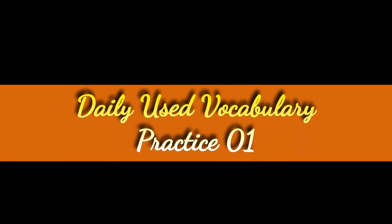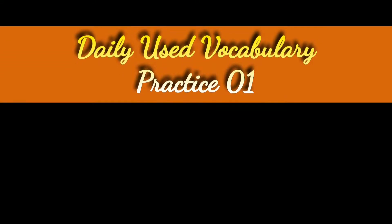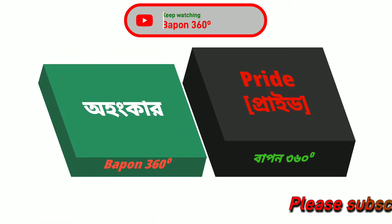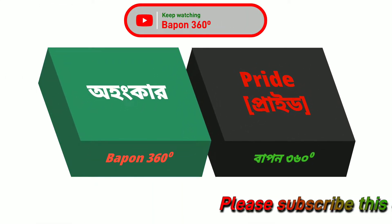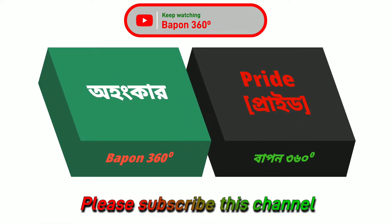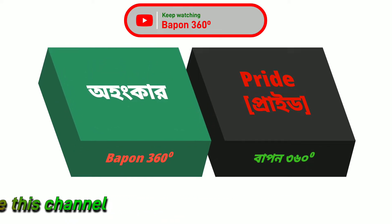Daily used vocabulary practice one. Ahunkar — pride. Pride, arthat ahunkar.